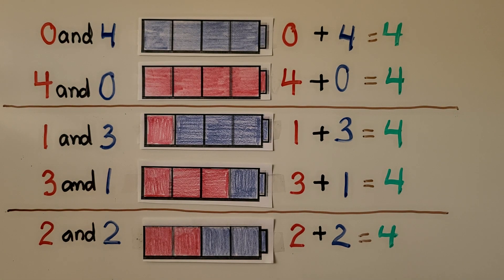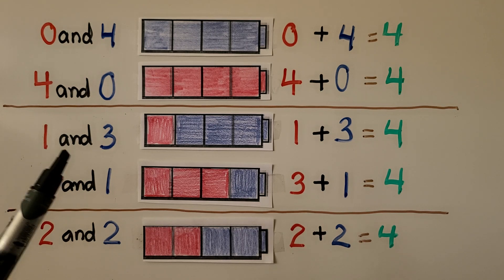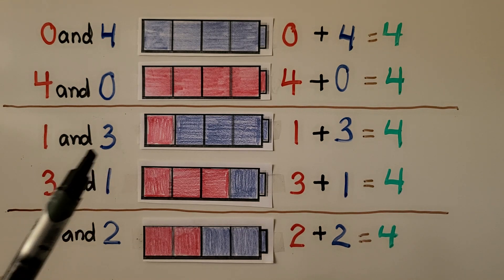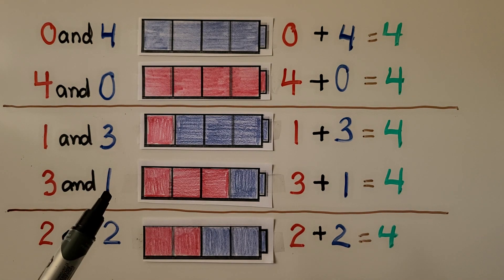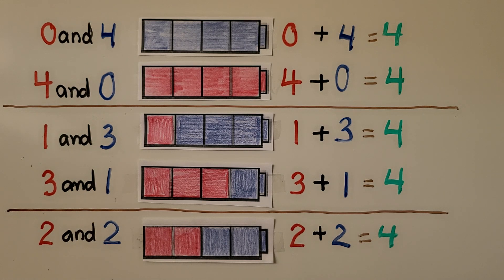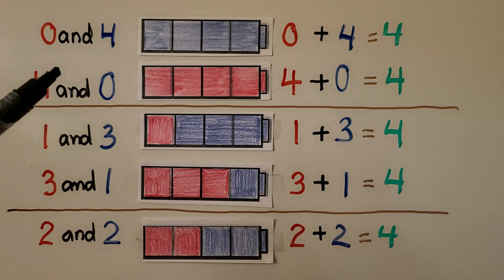Do you see how the numbers got switched around? Here it was a 1 and a 3, and here it was a 3 and a 1. Here it was a 0 and a 4, and here it was a 4 and a 0. We just switched them around.